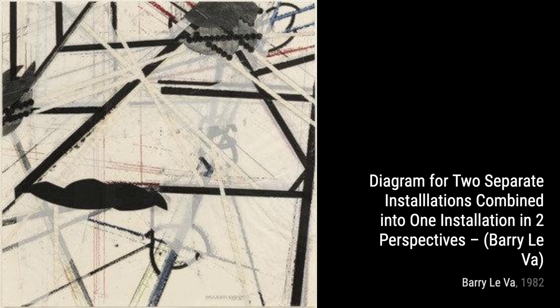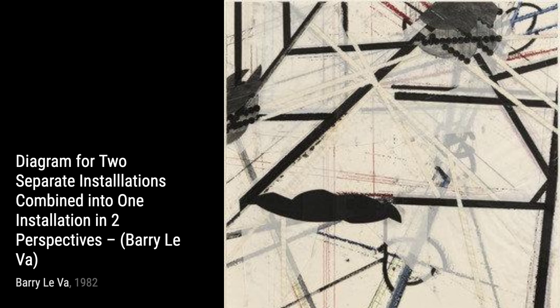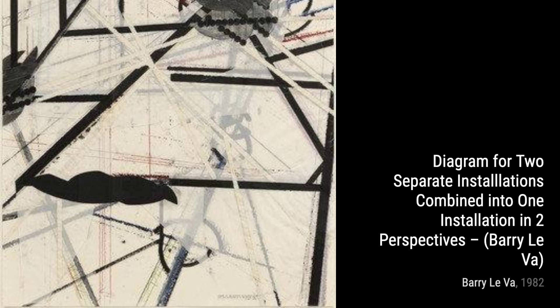Next up is Untitled from the series 4x4x4 by Barry Louvier. This artwork is part of a series and features a composition of geometric shapes and lines that create a sense of balance and harmony.